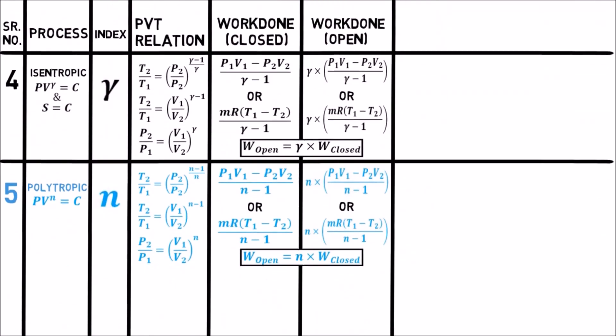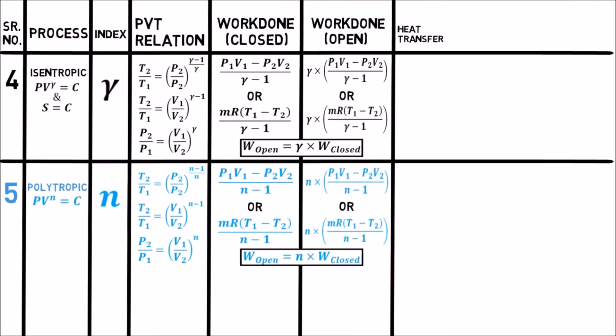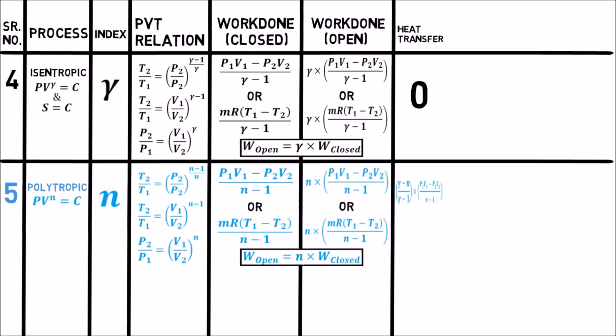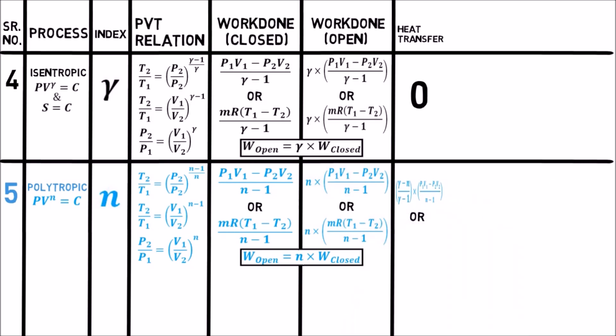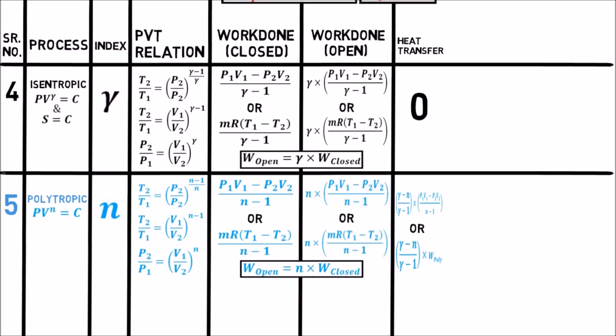We know that heat transfer in isentropic process is zero, i.e. no heat transfer takes place in an adiabatic process. For polytropic process, heat transfer is (gamma − n) divided by (gamma − 1) times work done of the polytropic process.